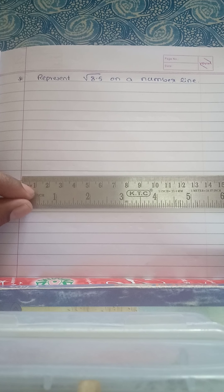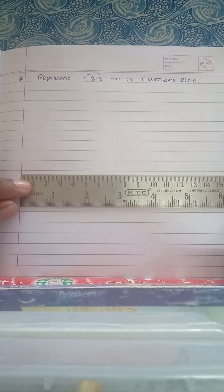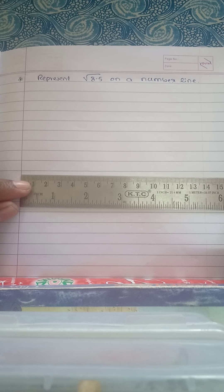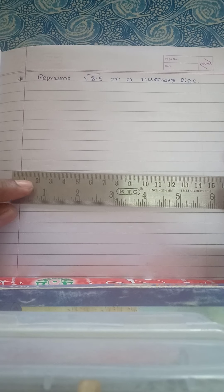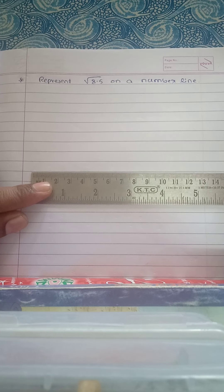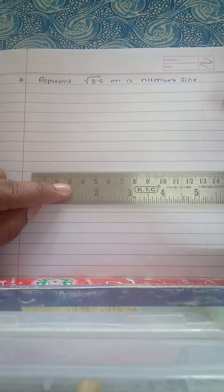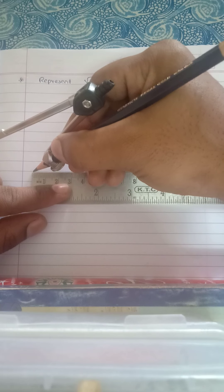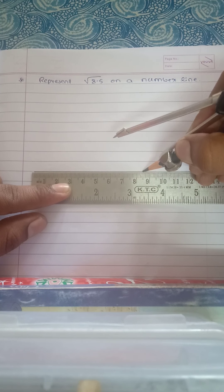Now we have to study how to represent root 8.5 on number line. First you should take a scale and draw a line of 8.5 centimeters.